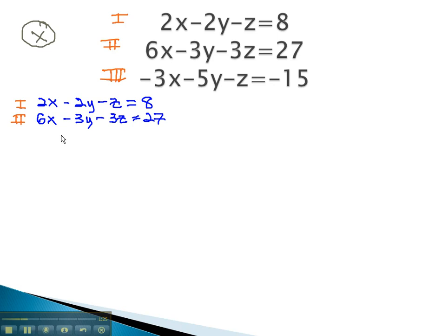We said we had to multiply the first equation to get the opposite of 6 by negative 3 on both sides. Now, the first equation is negative 6x plus 6y plus 3z equals negative 24. The second equation is still the same, 6x minus 3y minus 3z equals 27.